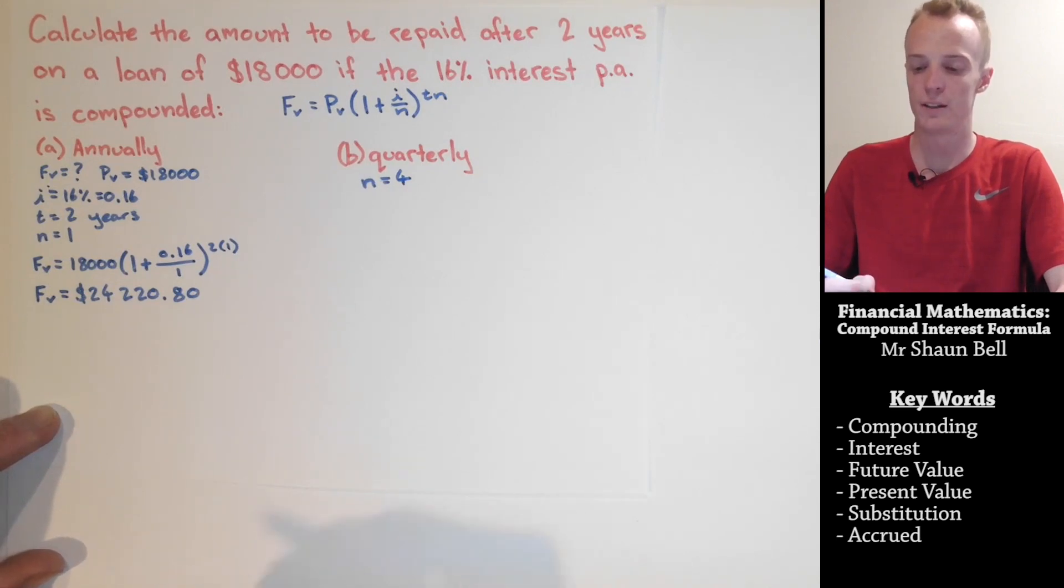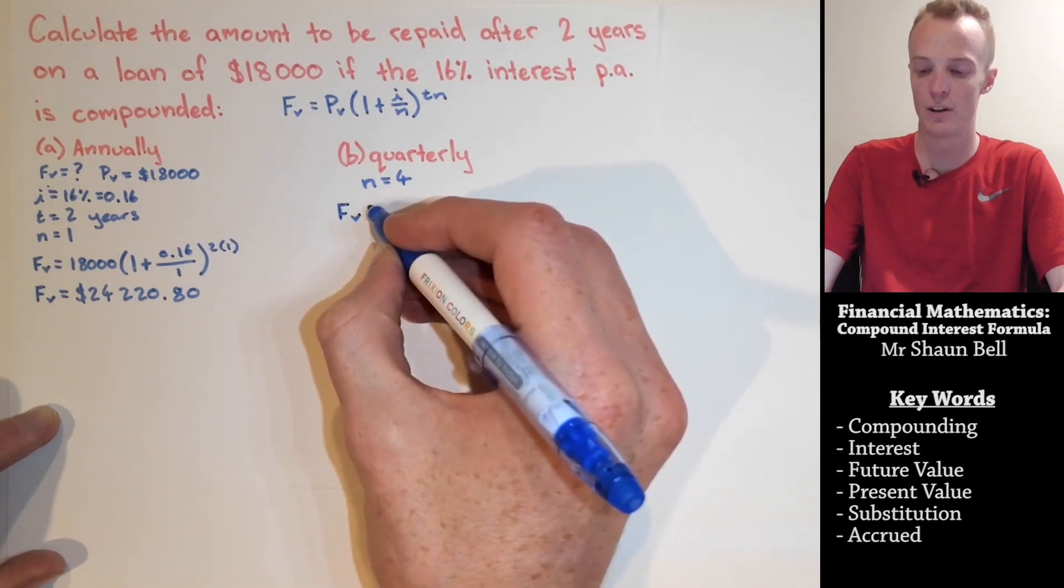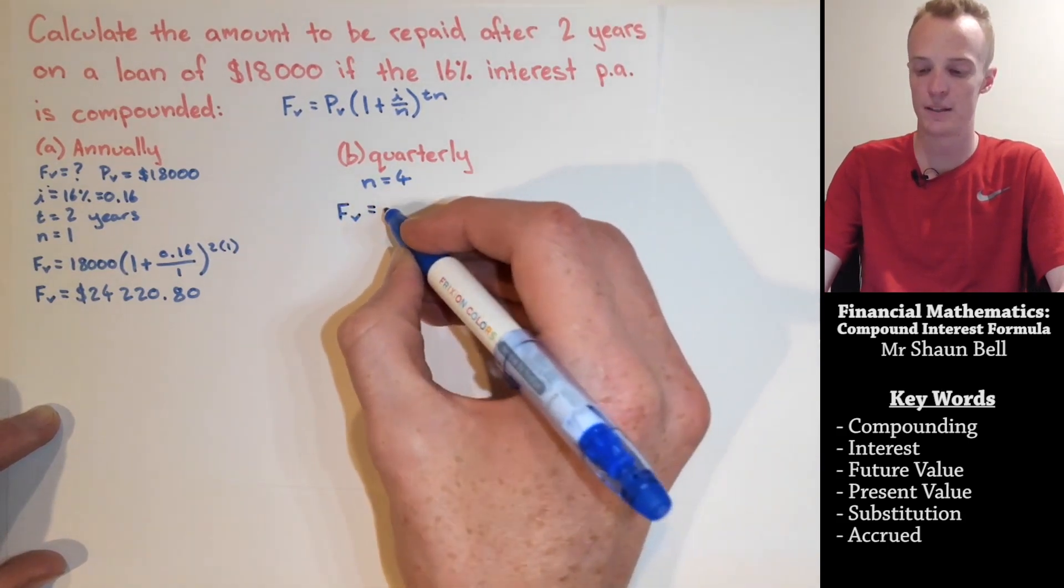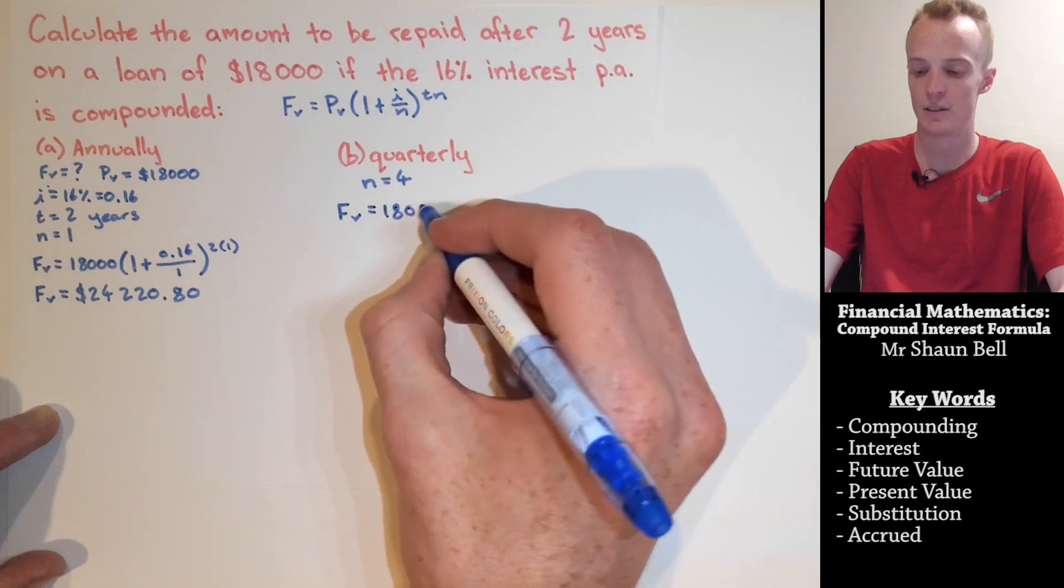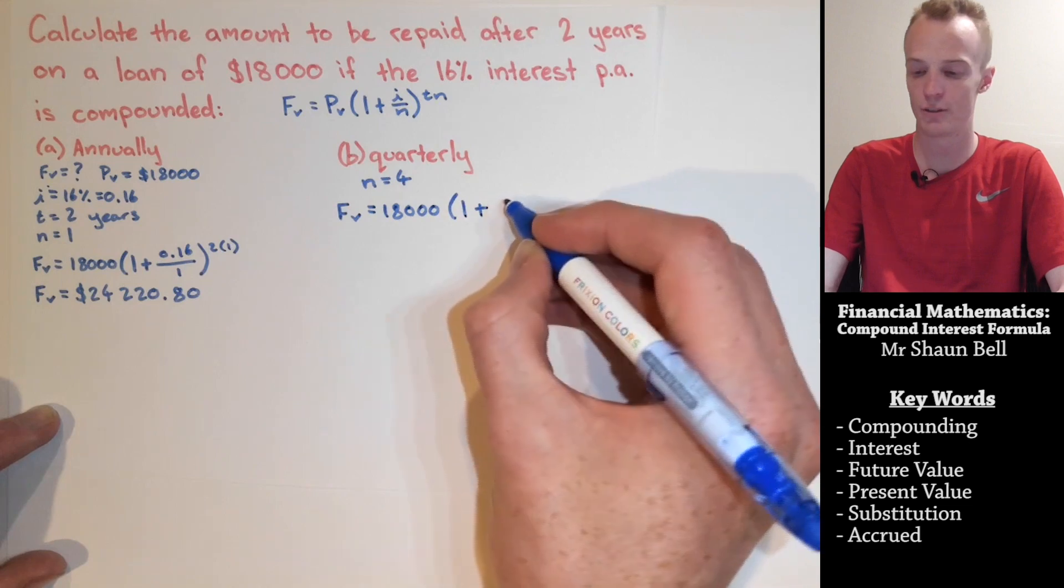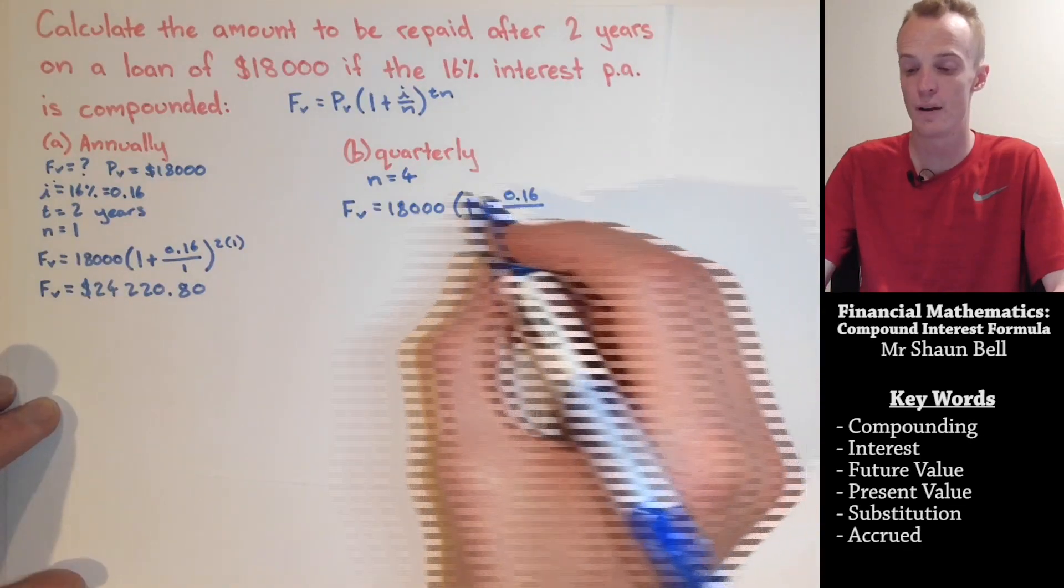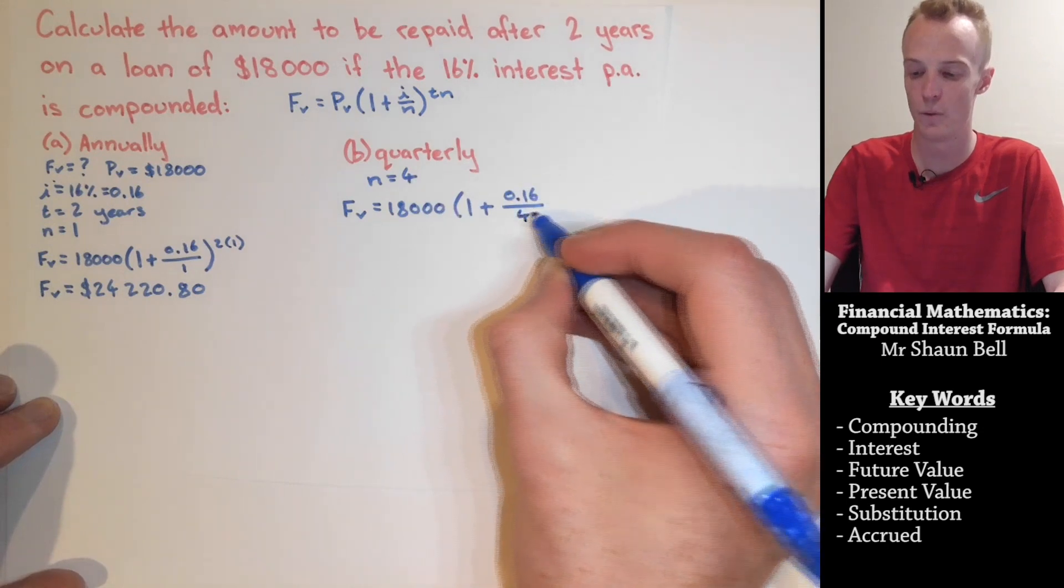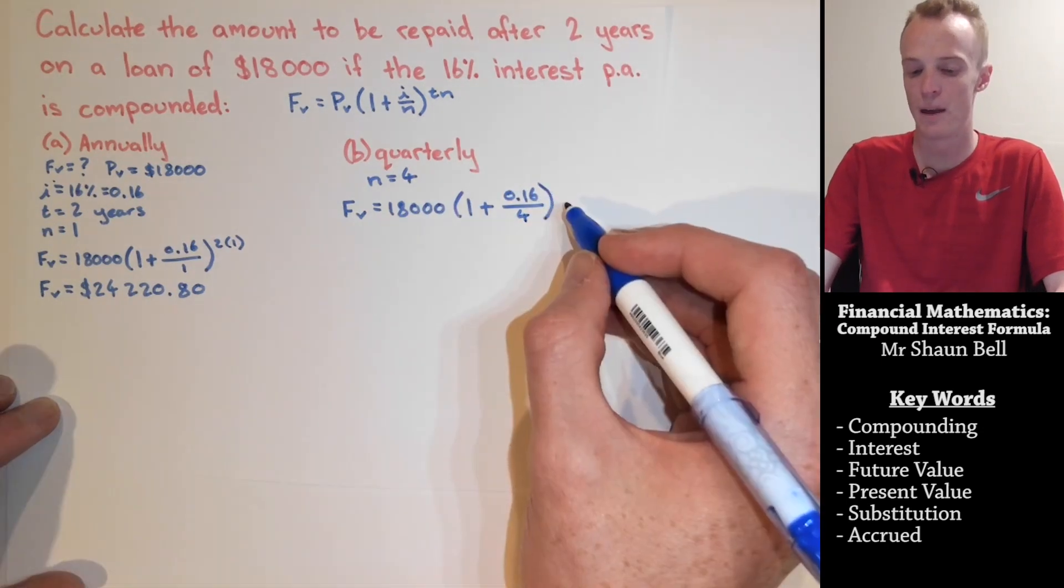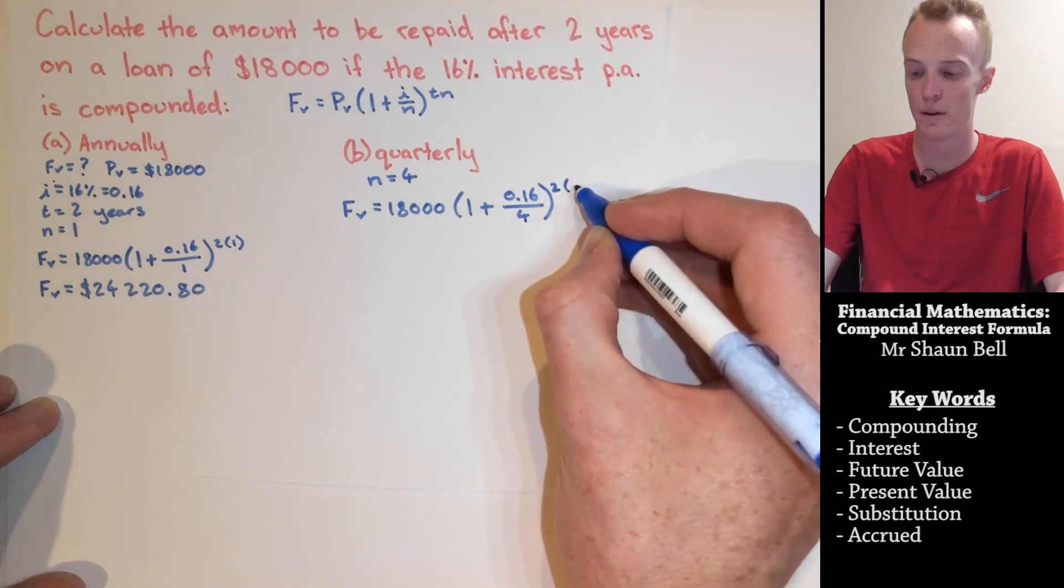So as before, let's substitute all the values back into our formula. Our future value, we don't know, so we leave it. Our present value is $18,000. That is going to be multiplied by 1, plus the interest, which is 0.16, divided by our n value of 4, to the power of our t, which is 2, multiplied by our n value of 4.